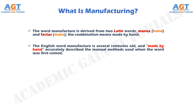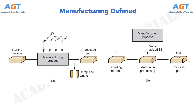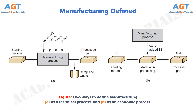Most modern manufacturing is accomplished by automated and computer-controlled machinery. In the modern context, manufacturing can be defined two ways: one technological and the other economic.